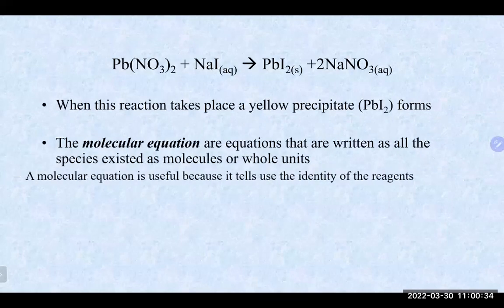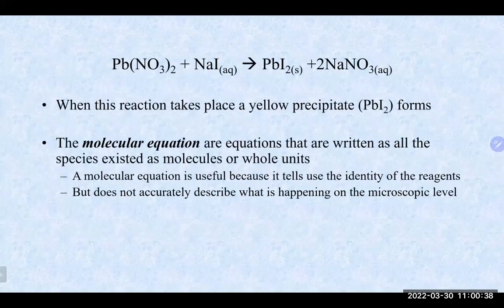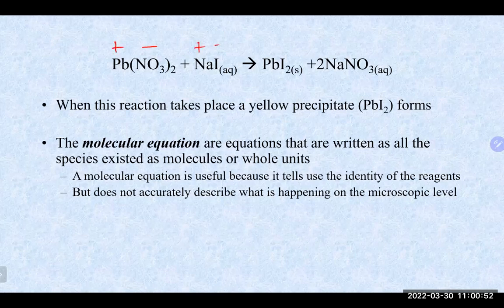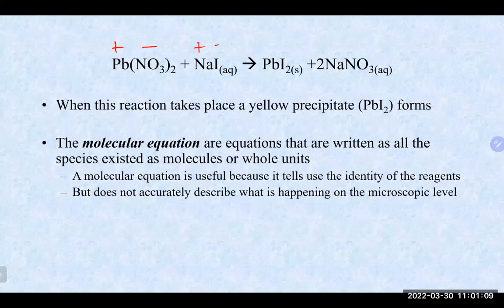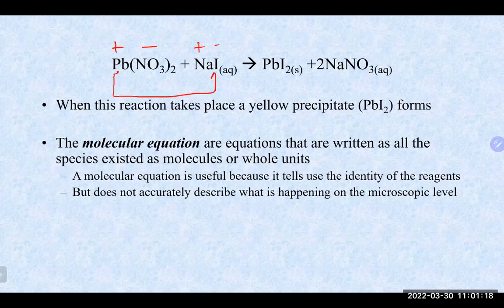Looking at the reaction of lead(II) nitrate and sodium iodide — how do we know this is a double displacement reaction? On the reactant side, lead(II) nitrate has a positive and negative ion, and sodium iodide has a positive and negative ion. Two ionic compounds coming together always gives a double displacement reaction. The two positive guys switch partners: lead²⁺ goes with iodide⁻ to form lead(II) iodide, and sodium⁺ goes with nitrate⁻ to form sodium nitrate.